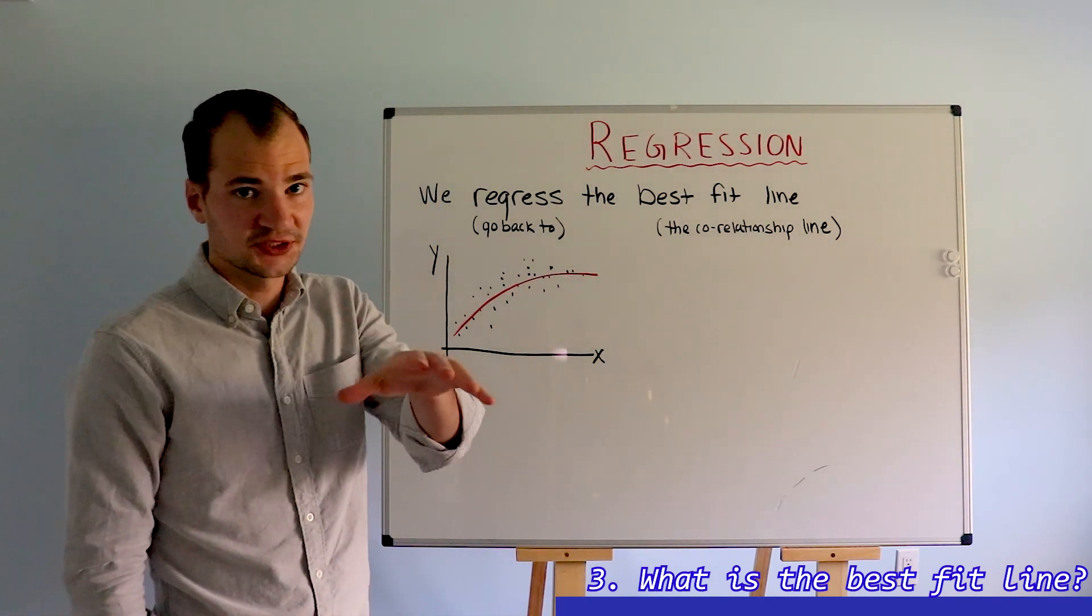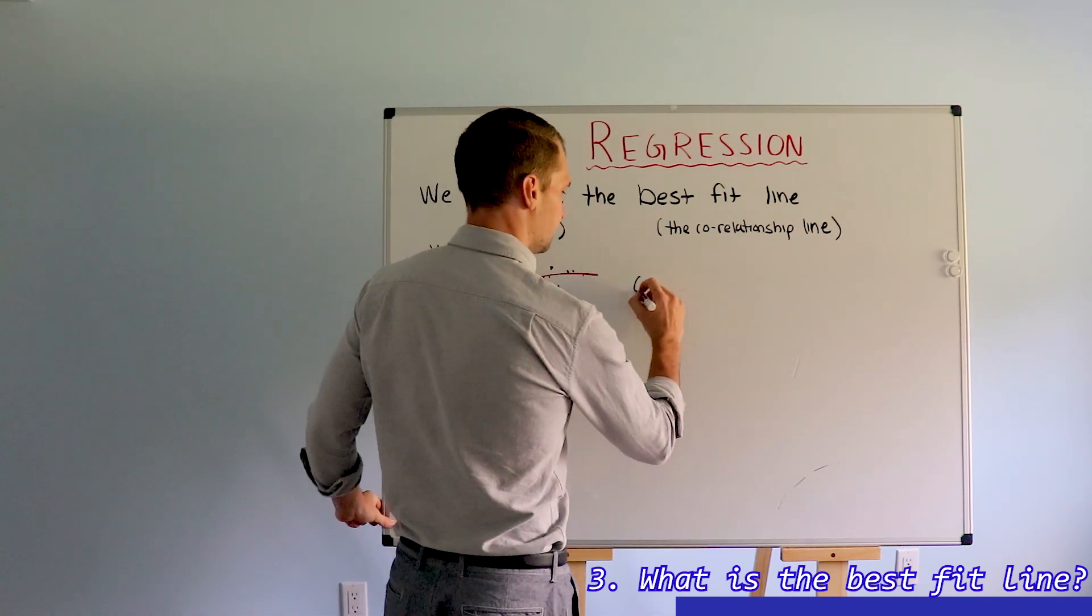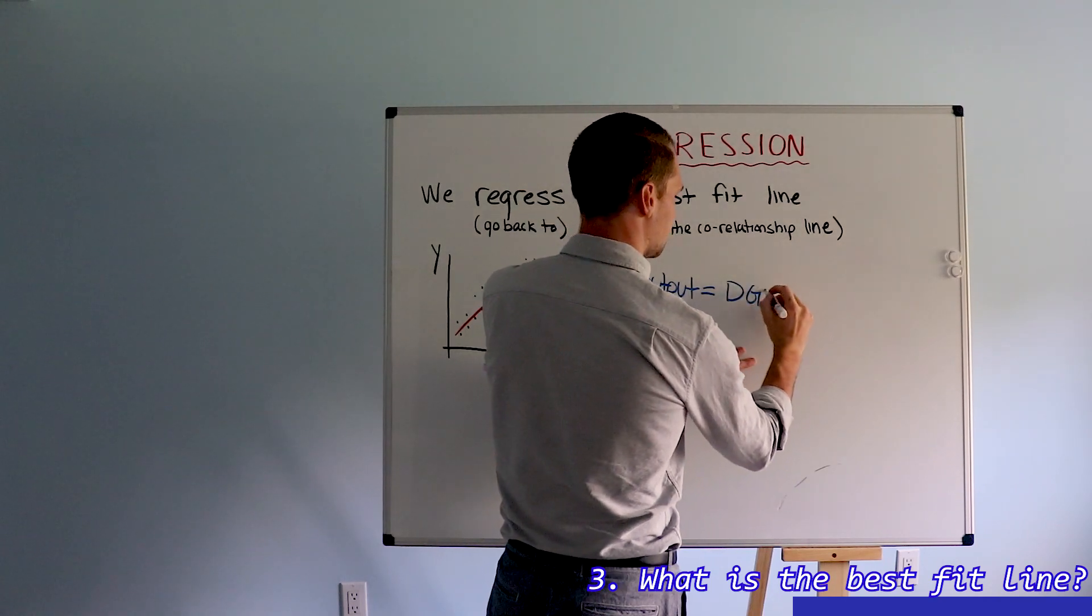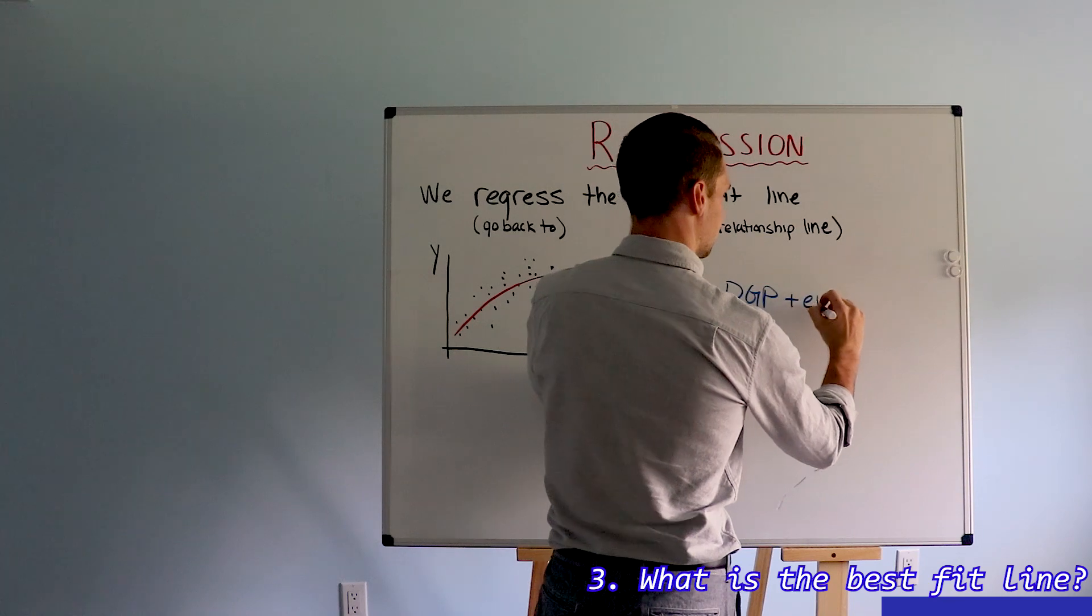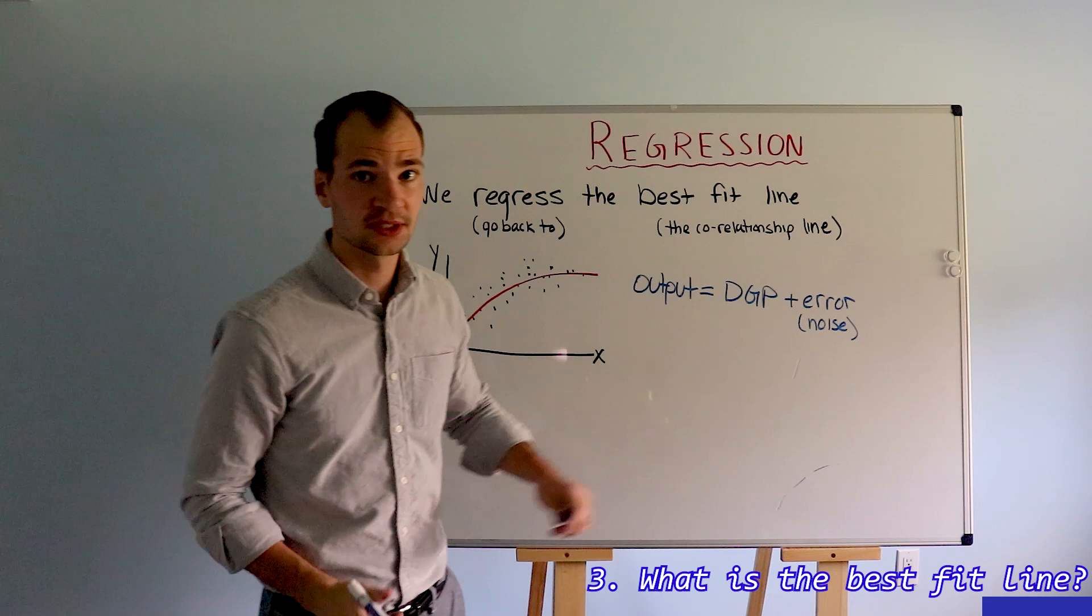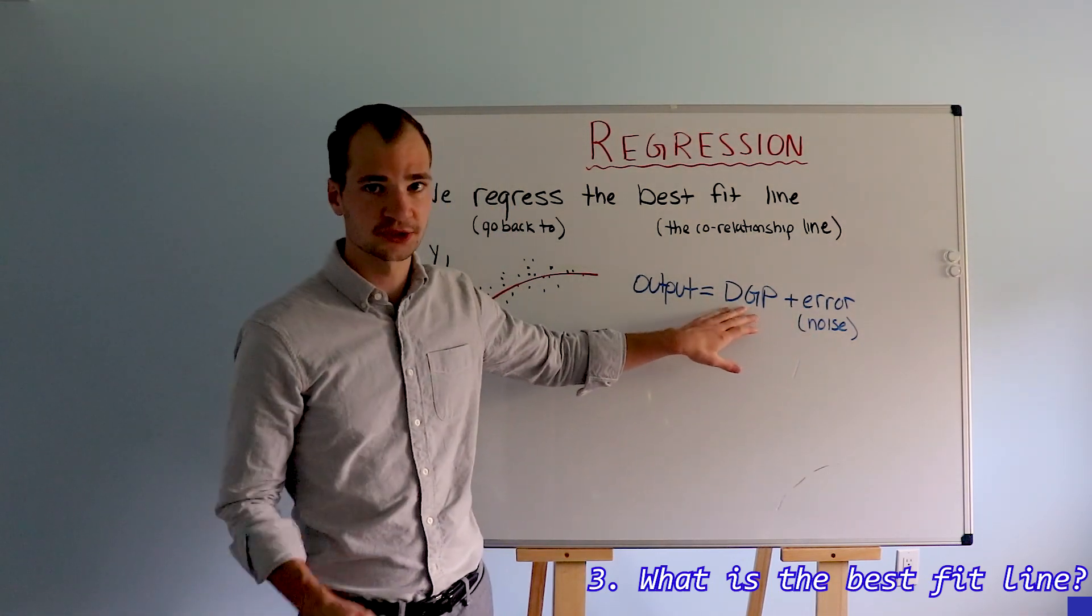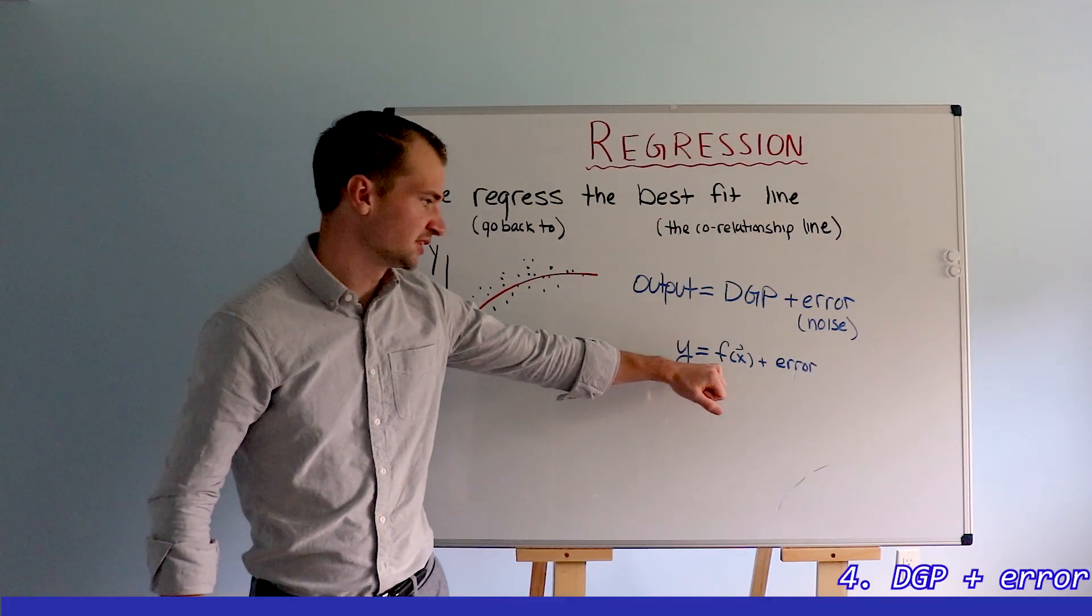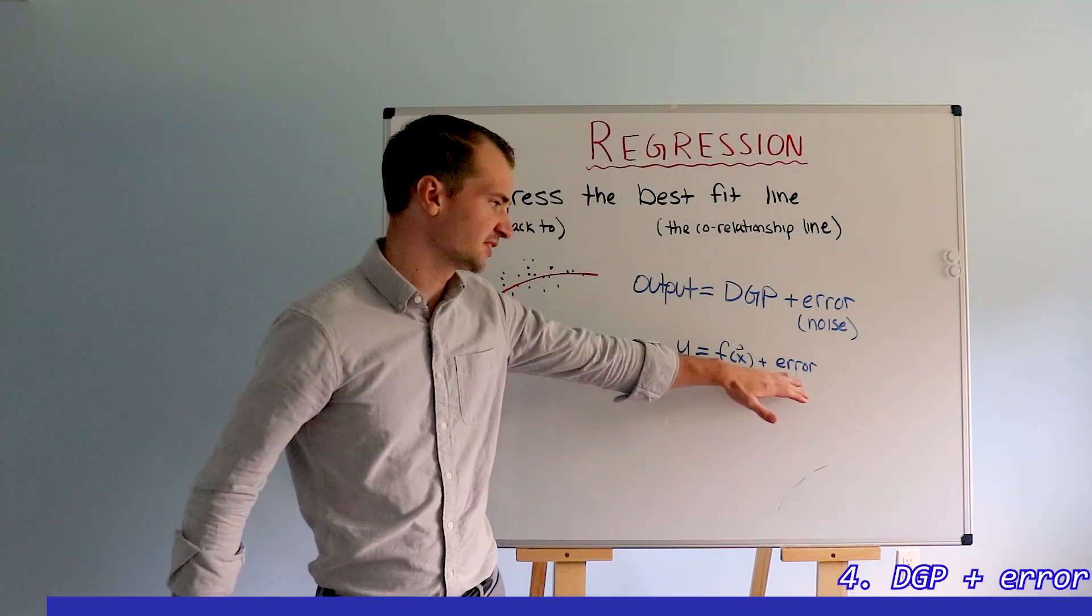Now the setup of every single regression equation looks like this, where the output equals what we call the true data generating process DGP plus an error. And this error is also called noise. Anything that we would be able to capture from this noise would go into the true data generating process. So our output is a function of x and here this notation means that x can be a matrix plus some error.